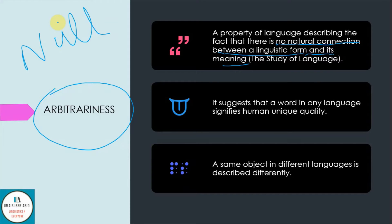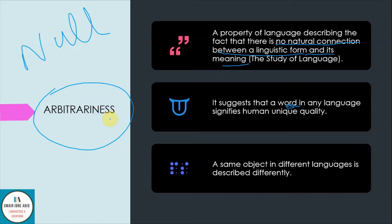In linguistics, arbitrariness is something different. It suggests that a word in any language signifies a human unique quality. For example, in each language there is a word for the same object: we have 'cat' in English, 'billy' in Urdu, and 'salab' in Arabic. The same object is described via different words in each language. So this is arbitrariness — a same object in different languages is described differently.